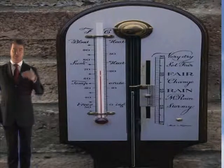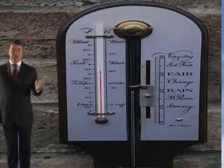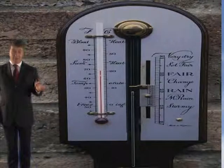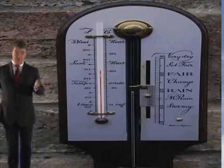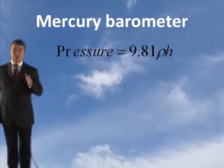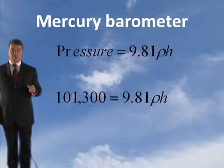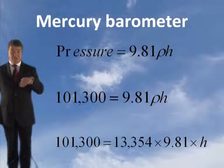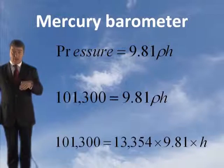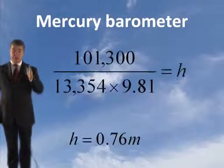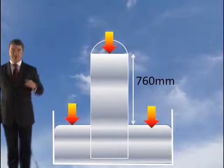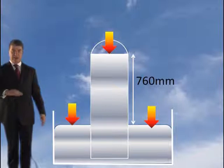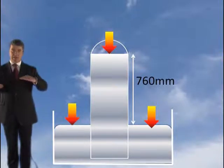So how high does the barometer column have to be? Atmospheric pressure at sea level is approximately 101,300 pascals. The formula to determine pressure on a column of mercury is: pressure equals 9.81 × ρ × H. Therefore, 101,300 = 9.81 × 13,354 × H, where 13,354 kg/m³ is the density of mercury. By transposition, that comes out at 0.76 metres. So a column of mercury 0.76 metres high has the same pressure as the atmosphere.